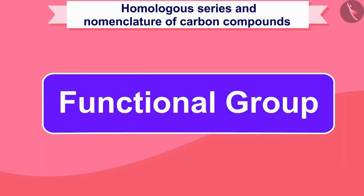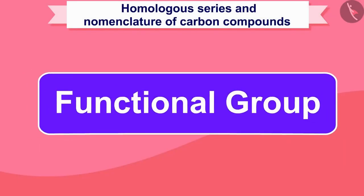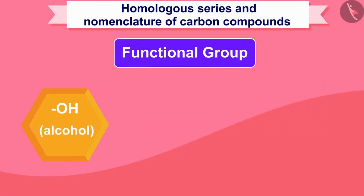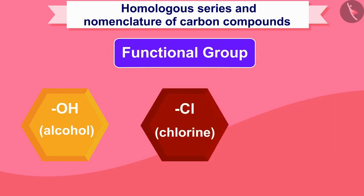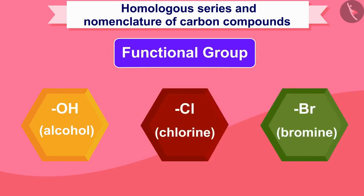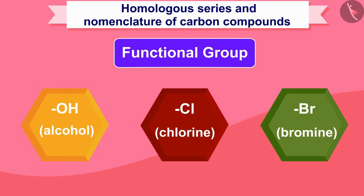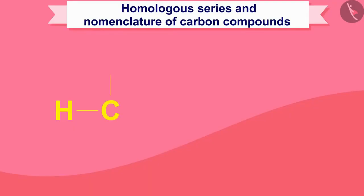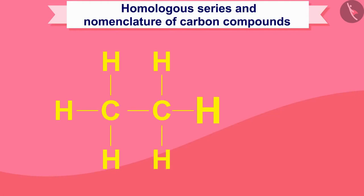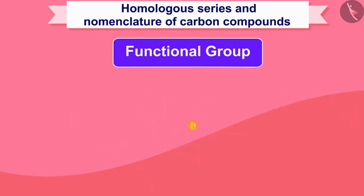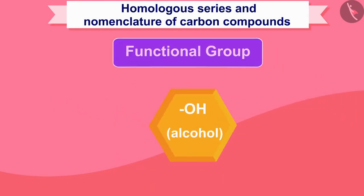Let us now understand what a functional group is — such as -OH for alcohol, -Cl for chlorine, -Br for bromine, etc. This functional group gives compounds special characteristics. When another group displaces a hydrogen inside a hydrocarbon, it is called a functional group. For example, take alcohol: -OH.